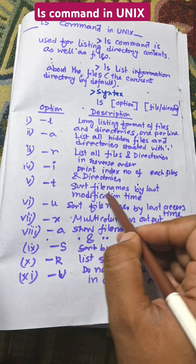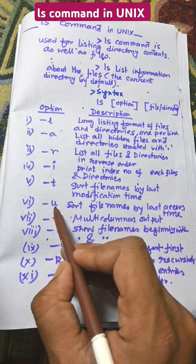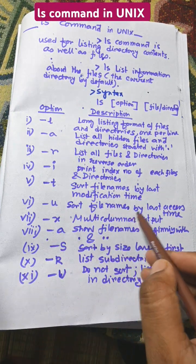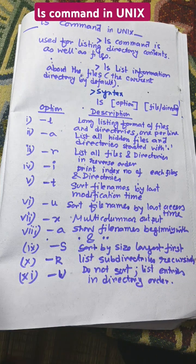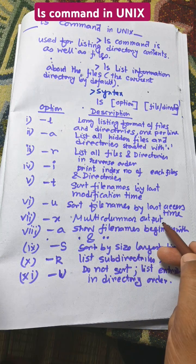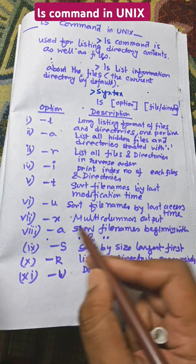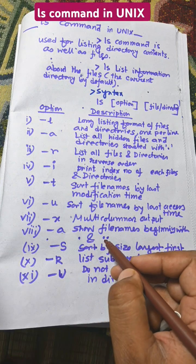ls hyphen t sorts filename by last modification time. ls hyphen u sorts filename by last access time. ls hyphen x shows multi-columnar output column-wise. ls hyphen a shows filenames beginning with dot and double dot.